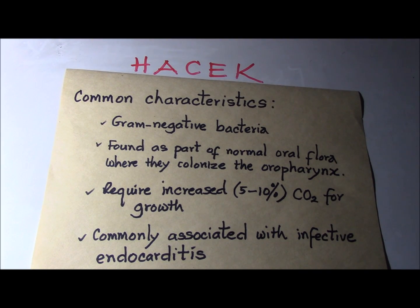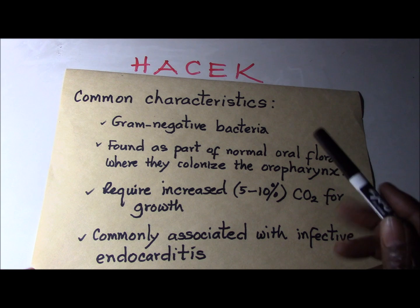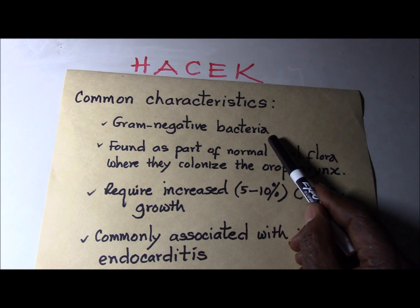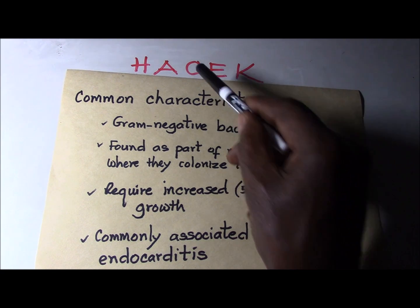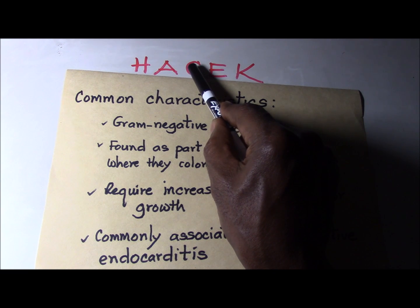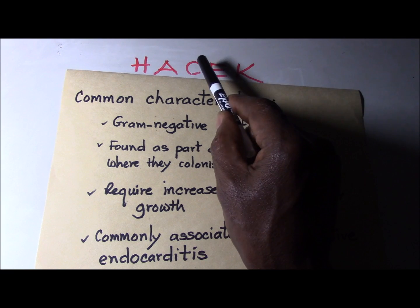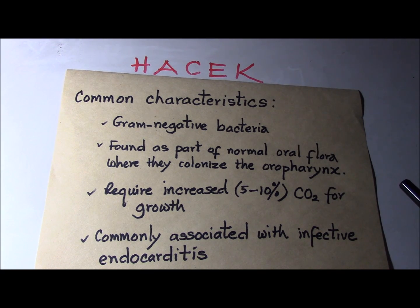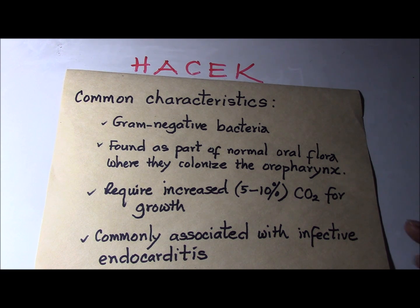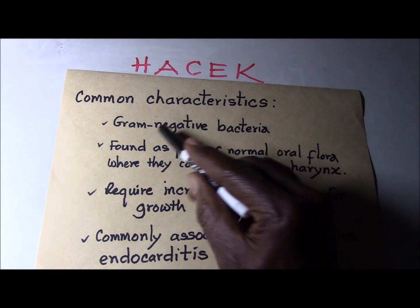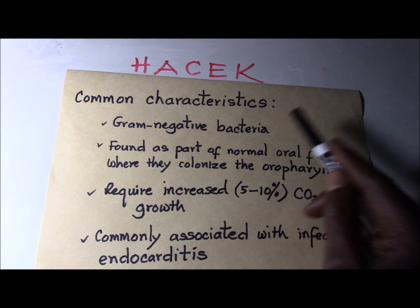Now let us look at some of the common characteristics of the HACEK group of organisms. They are generally gram-negative bacteria. Some of them, like the Haemophilus species, are pleomorphic and coccobacillary in shape. Cardiobacterium hominis would be somewhat gram-variable as well as pleomorphic, rod-shaped, with swelling at both ends. Otherwise you can lump them all as gram-negative bacilli.